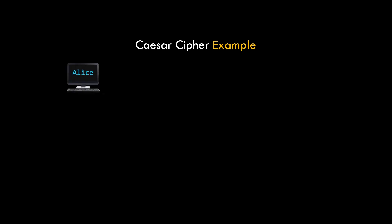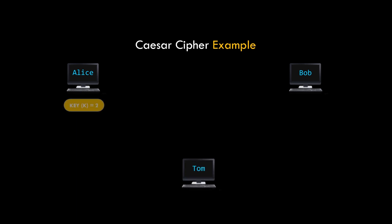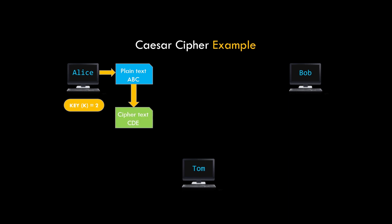Let's see a real example with our all-time favorite characters Alice, Bob, and Tom. In this example we will assume that the key value is 2. Alice encrypts the message ABC using modified Caesar cipher technique with key value 2 and gets the corresponding ciphertext as CDE. We assume that Bob knows that Alice is using this technique as well as the key value.